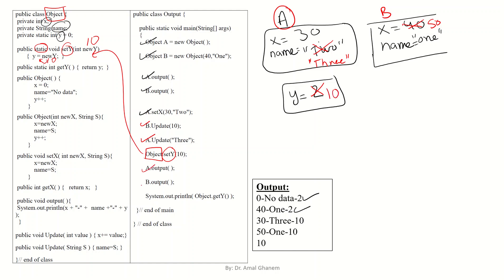Now we call a.output() and b.output(). For object a, x is 30, name is "3", and y is 10, so the output is: 30 - 3 - 10. For object b, x is 50, name is "1", and y is 10, so the output is: 50 - 1 - 10. The last statement prints Object.getY(), which returns y — currently 10 — so we output 10.